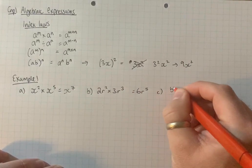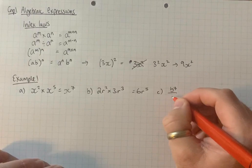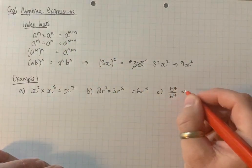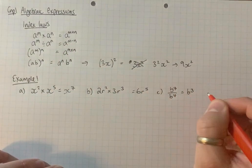b to the 7 over b to the 4. Using the division rule, just subtract the powers. 7 take 4 is 3, r to the 3.